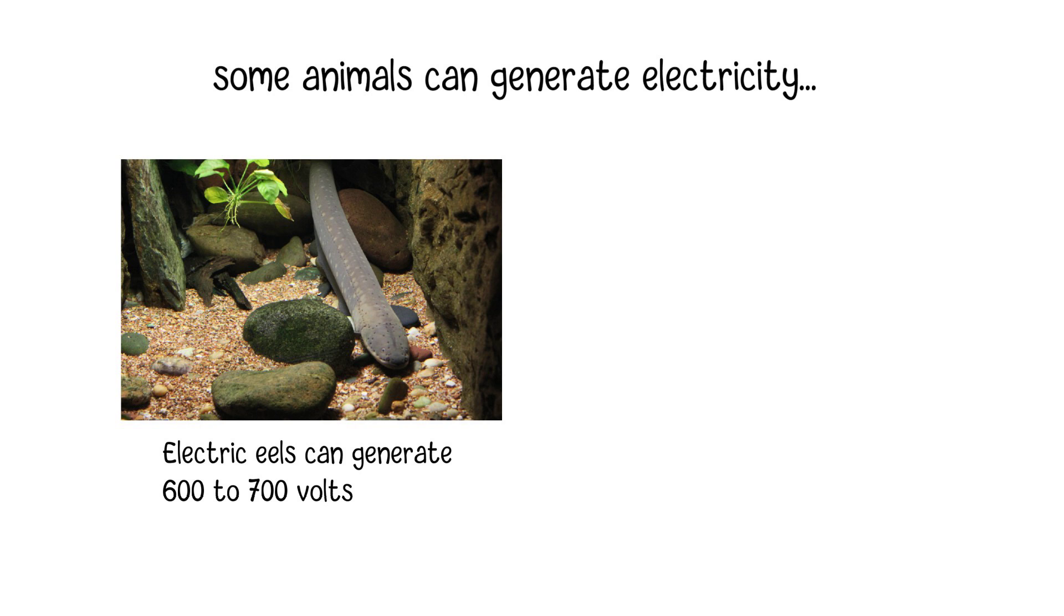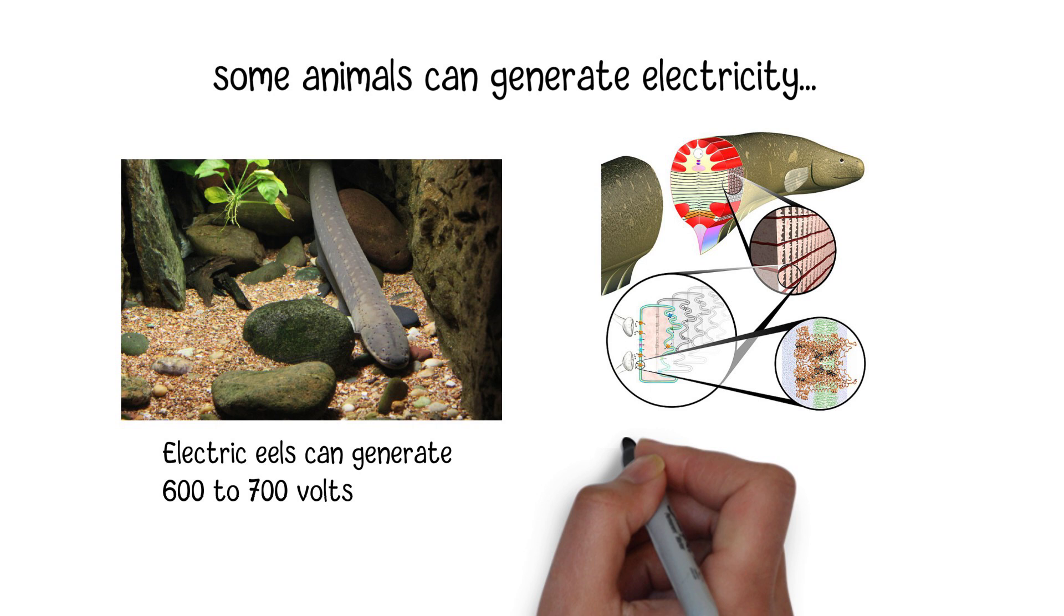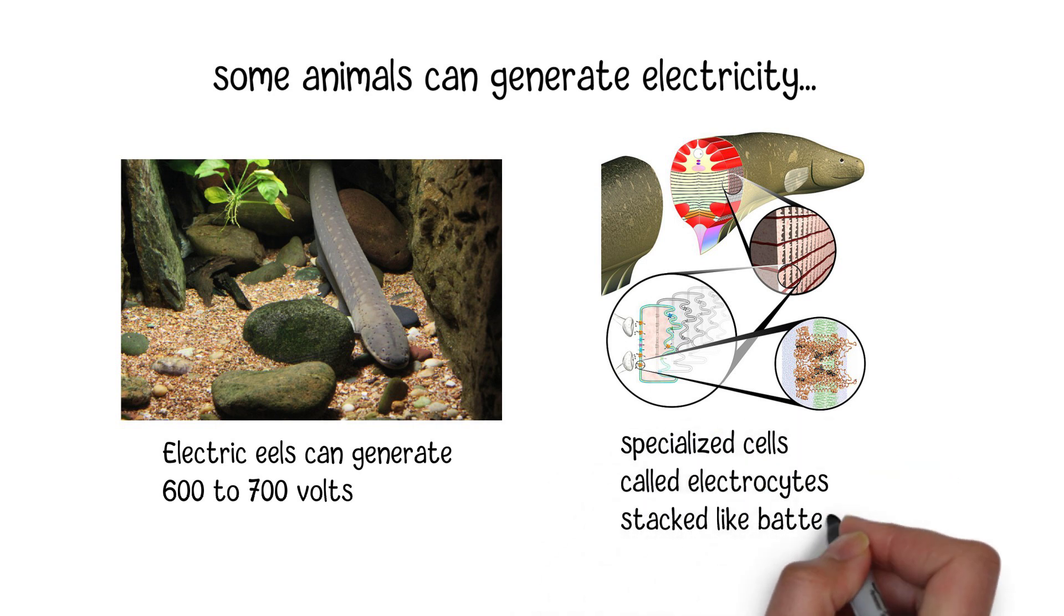It allows the eel to stun or deter predators, catch prey, and communicate with other eels. Electric eels have specialized cells called electrocytes stacked like batteries in their bodies. These cells are capable of generating electrical charges.